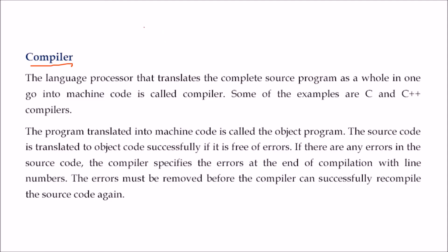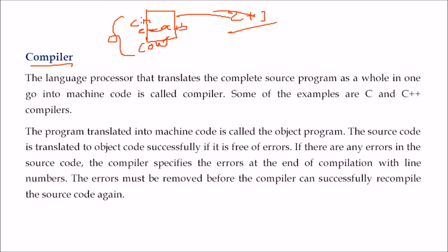The compiler takes the entire source program completely — this is very important. For example, if you have written C++ code for adding two numbers, you take inputs for A and B, compute C = A + B, and use cout to display the output. This complete code is converted entirely into machine code by the compiler. Every language has its own compiler — C, C++, and so on.